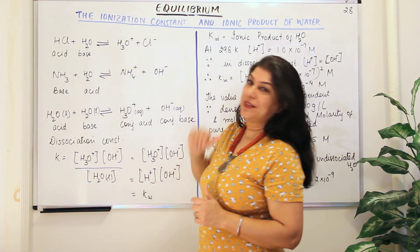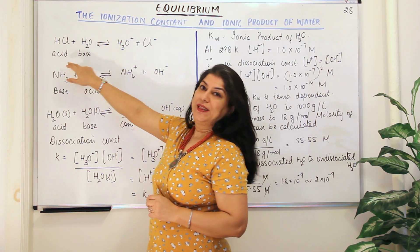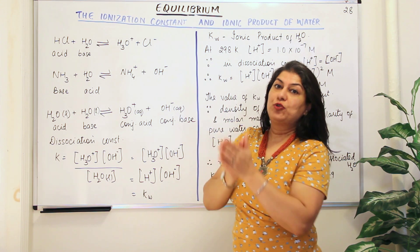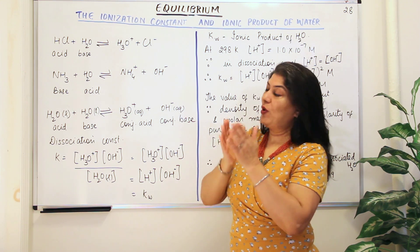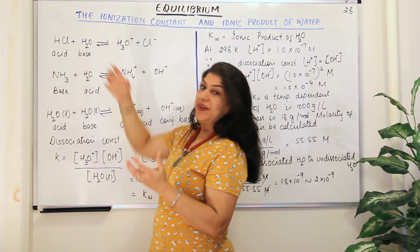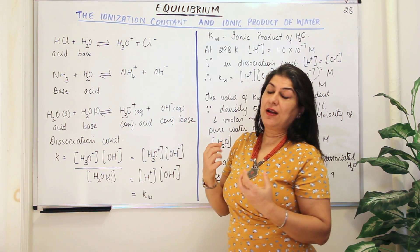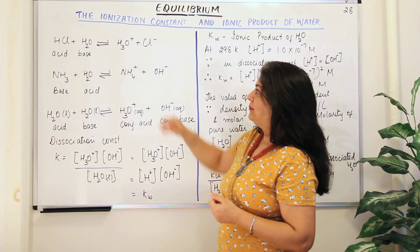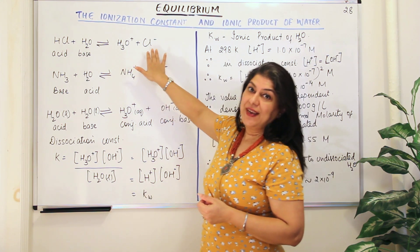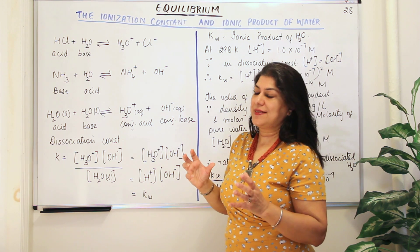Two examples we have done: when water reacts with HCl, the HCl acts as the proton donor, so HCl acts as the acid. In this reaction, water accepts that proton and therefore acts as a base, resulting in the formation of H₃O⁺ and Cl⁻. So in this reaction, water acted as a base.